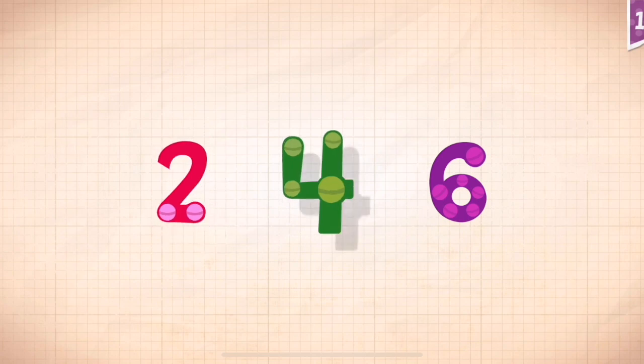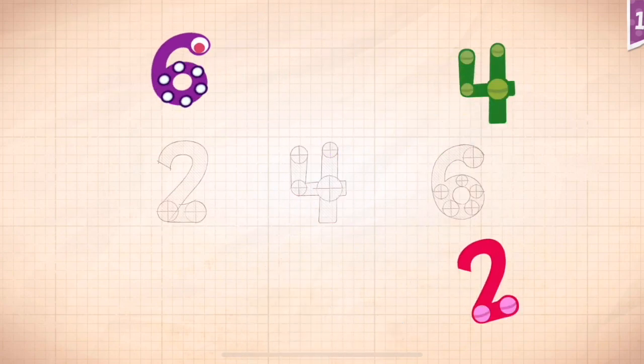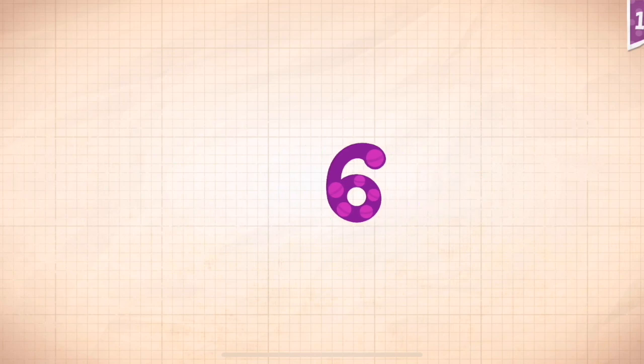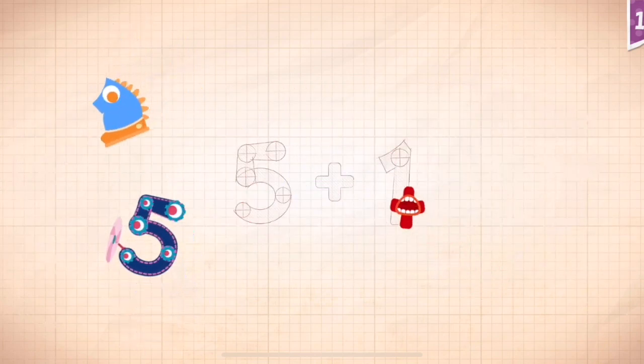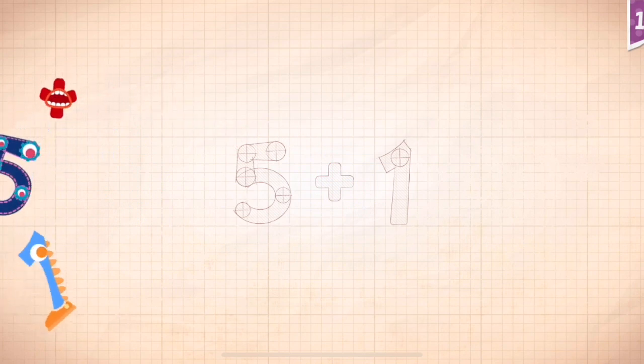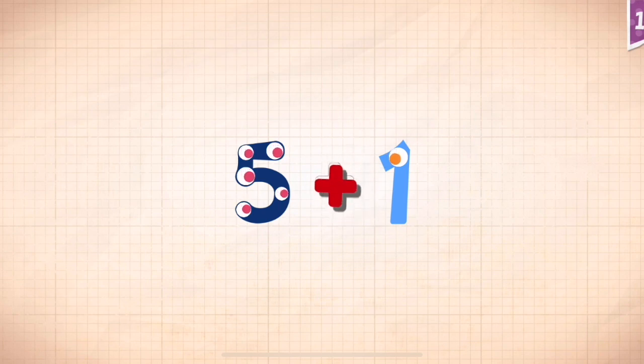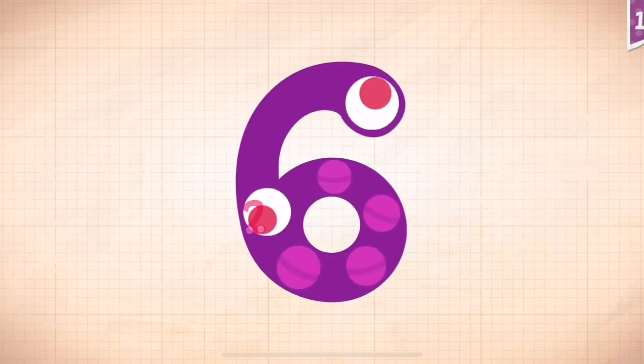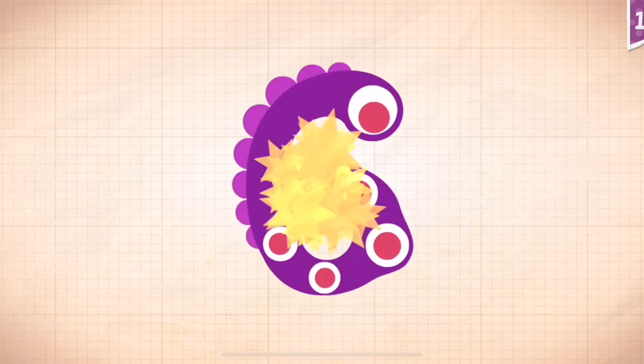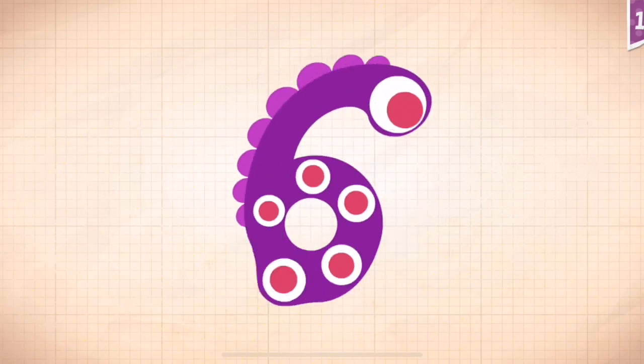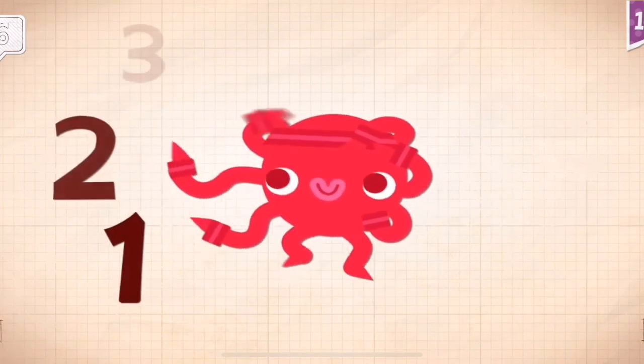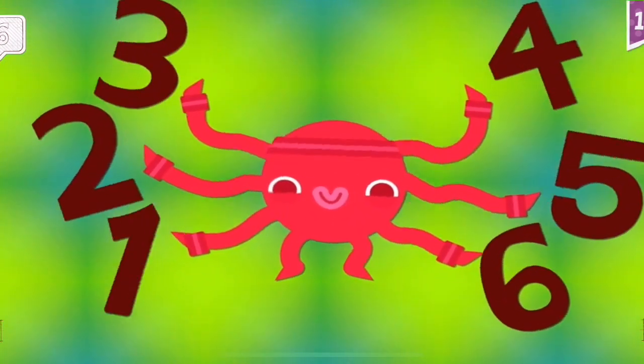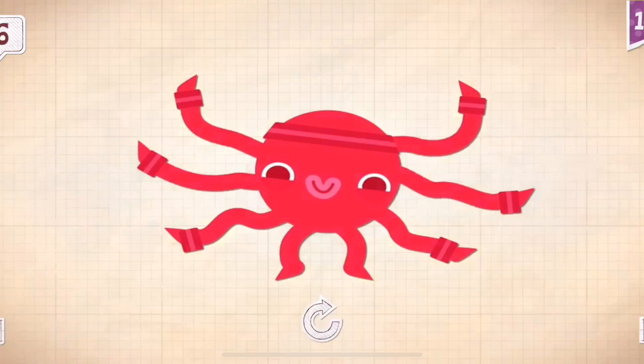Count by twos. One plus five equals six. Touch the monster: one, two, three, four, five, six. Sunny has six very wiggly arms.